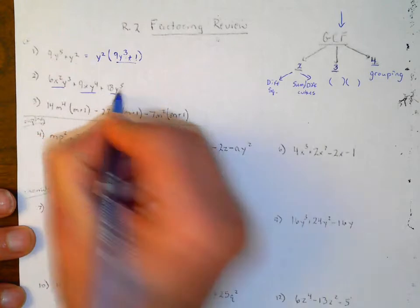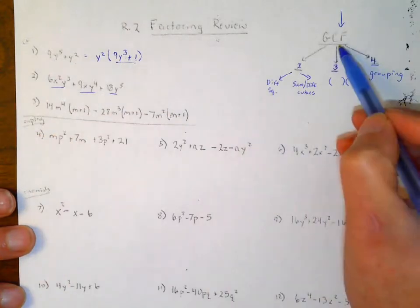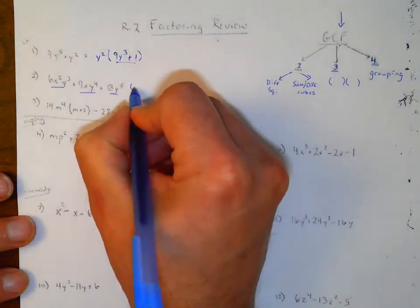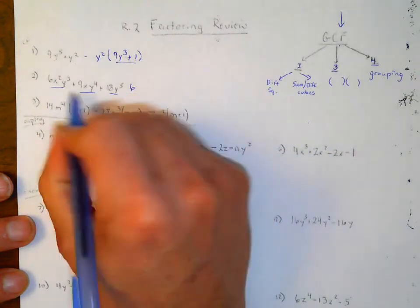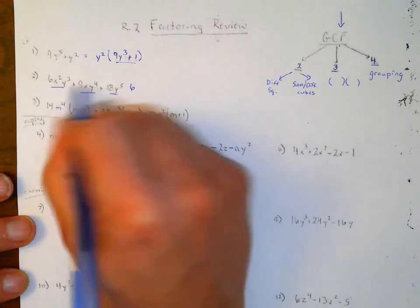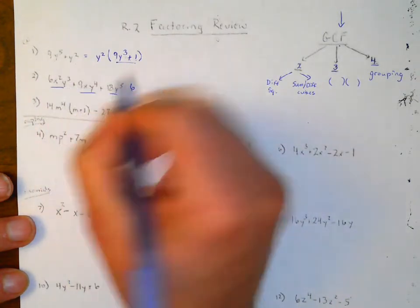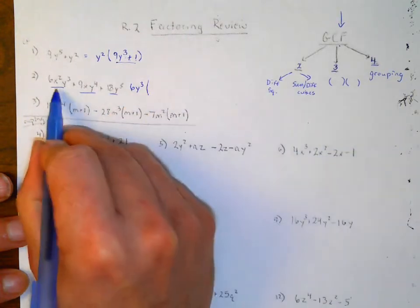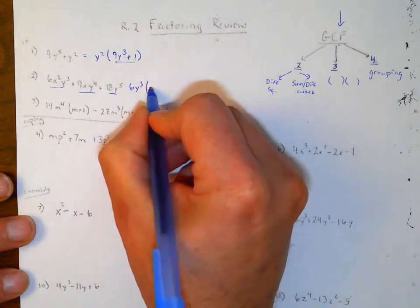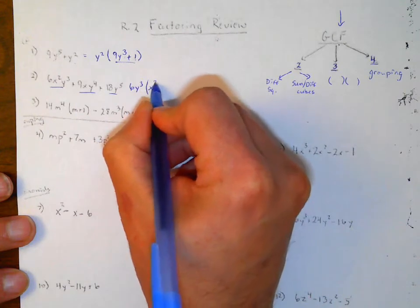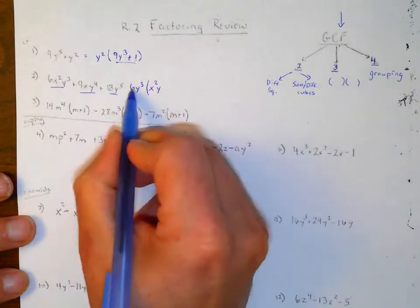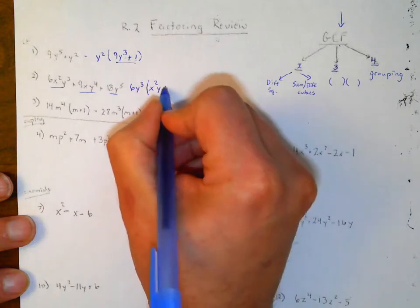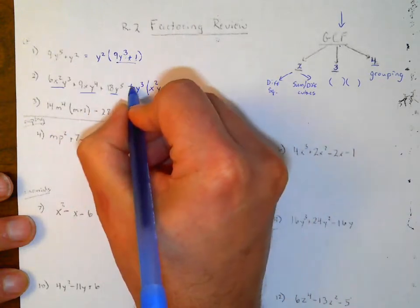Here we have three terms. The first thing we look for is the greatest common factor. It looks like we can take a 3 out of all of them — there are no x's common to all terms, but we can take y³ out. So then we're left with 2x² and a y inside. When I multiply this together, it gives me the original.